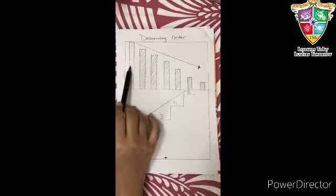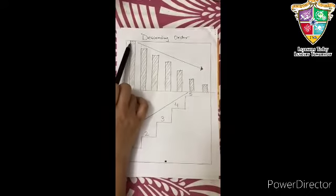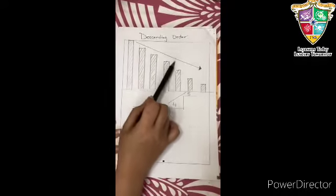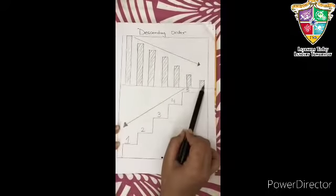Look at this picture. This is the biggest one and this is the smallest one. See, we are coming from up to down like this. From biggest to the smallest one.